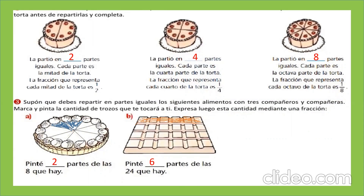Si a este pastel lo decido cortar en cuatro partes iguales, cada parte es la cuarta parte de la torta. Por lo tanto, la fracción que representa cada cuarto de la torta es un cuarto. Si decidimos partir la torta en ocho partes iguales, cada parte es la octava parte de la torta. La fracción que representa cada octava parte es un octavo.